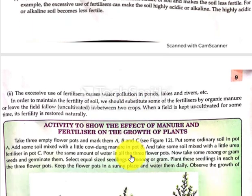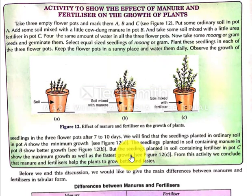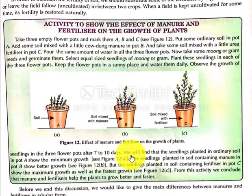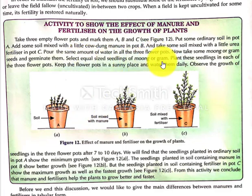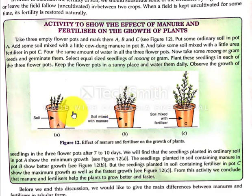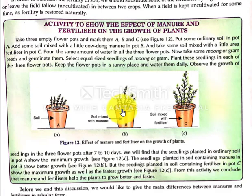There is an activity: we can observe how using manure and fertilizers affects the growth of plants. You will have three flowerpots: A, B, and C. We will take the same type of soil, the same quantity of soil, the same amount of seedlings, and the same amount of water. In the third pot, fertilizer is added to the soil.